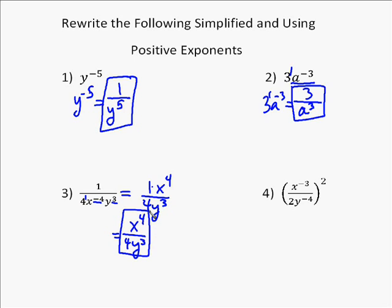Number 4, whenever you've got the power of a fraction, you've got to multiply the exponent by both the numerator and the denominator. So the numerator becomes x to the negative 6, and the denominator becomes 2 squared y to the negative fourth.